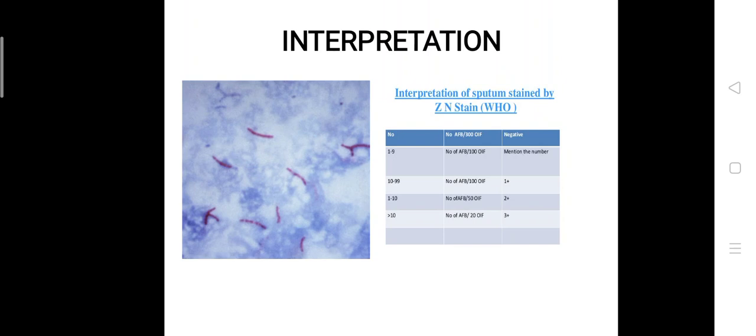If there is one to ten number of AFB per oil immersion field, it is graded as two plus. If there is more than 10 number of AFB per oil immersion field, it is graded as three plus. This is all about the acid fast staining.